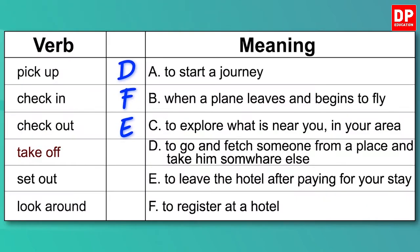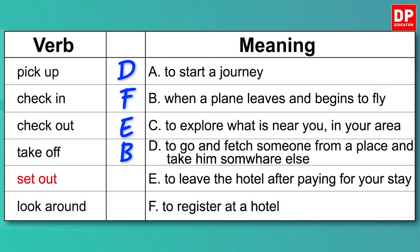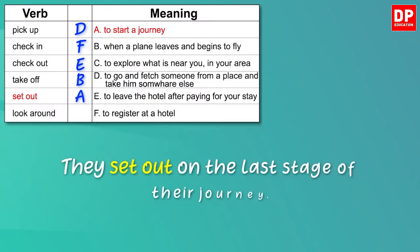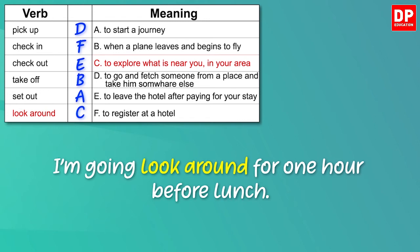The next one is take-off. It is when a plane leaves and begins to fly. For example: The plane will take off in a minute. Now the next one — set-out. Set-out means to start a journey. For example: They set out on the last stage of their journey. Now the last one — look around. That means to explore what is near you or in your area. For example: I'm going to look around for one hour before lunch.